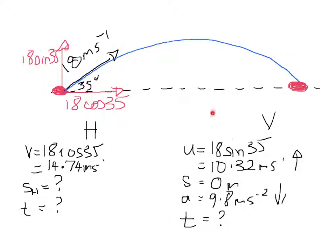So on this side, there's one unknown, which is the time. On the horizontal part of things, we have two unknowns. So we're going to look at the vertical side of the motion first.